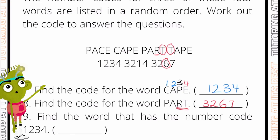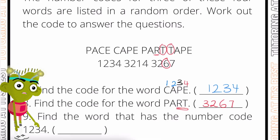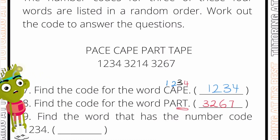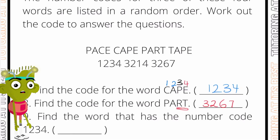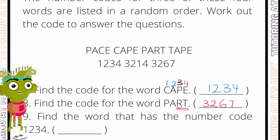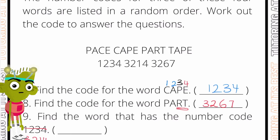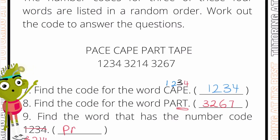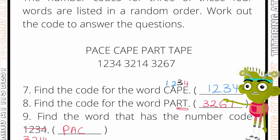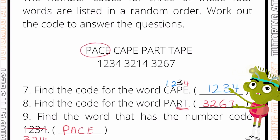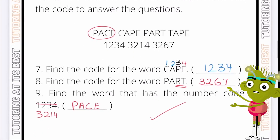For our final question in this series, find the word that has the number code 3214. We know 3 is P, 2 is A, 1 is C, and 4 is E — so the answer is 'pace'. Marvelous work!